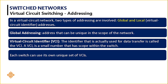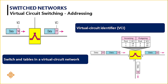In virtual circuit switching, there are two types of addresses: a global address and a local address. The global address is unique and has scope within the entire network. More importantly, the VCI — virtual circuit identifier — is used to transfer data and establish the connection. The VCI has scope only within a switch, while the global address has scope within the complete network. Each switch will have its own VCIs.